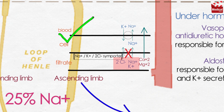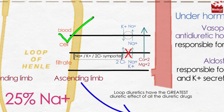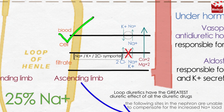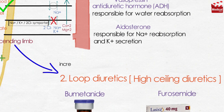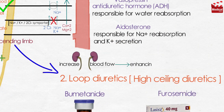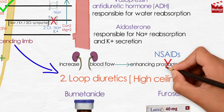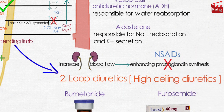These agents have the greatest diuretic effect of all the diuretic drugs, as the ascending limb accounts for reabsorption of 25 to 30 percent of filtered sodium, and the following sites in the nephron are unable to compensate for the increased sodium load. Loop diuretics may increase renal blood flow, possibly by enhancing prostaglandin synthesis. Non-steroidal anti-inflammatory drugs inhibit renal prostaglandin synthesis and can reduce the diuretic action of loop diuretics.